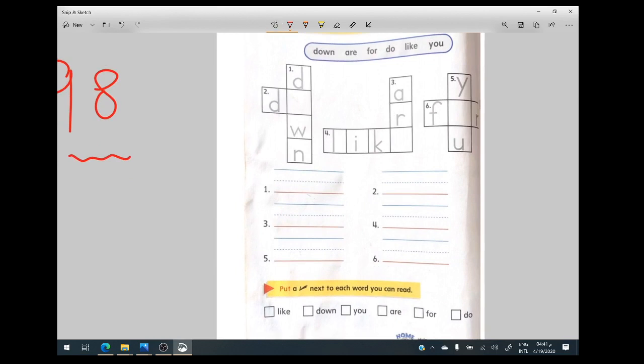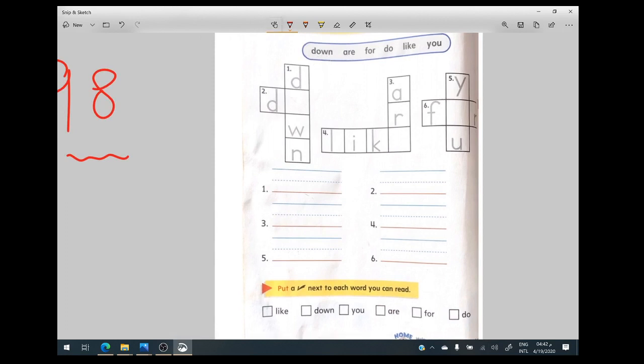The words that we have in the book are: down, are, for, do, like, and you. Let's begin. What do you think? I have the letters d, w. Which one of these words can be done if I put o here? So I have the word down. Let's write it here. And also on number two I have the word do.